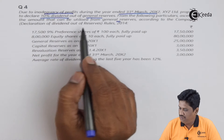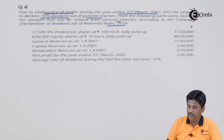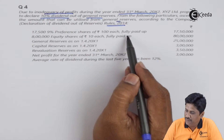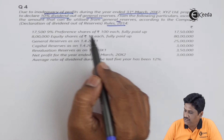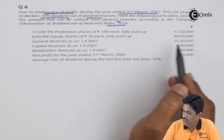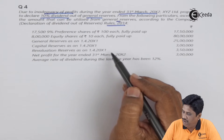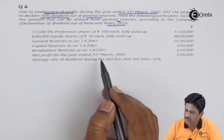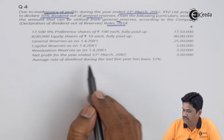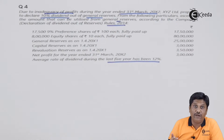Let's read the question. According to the company's declaration of dividend out of reserve rule 2014, आप कितना profit general reserve में से use कर सकते हो. आपको preferential capital दिया हुआ है 17,50,000; 9% preferential share capital of 1,80,000; 8 lakh equities of 10 fully paid = 80 lakhs; general reserve 25 lakhs; capital reserve 3 lakhs; revaluation reserve 3 lakhs; net profit for the year 3 lakhs (31st May 2022). Average rate of dividend during the last 5 years has been 12%.